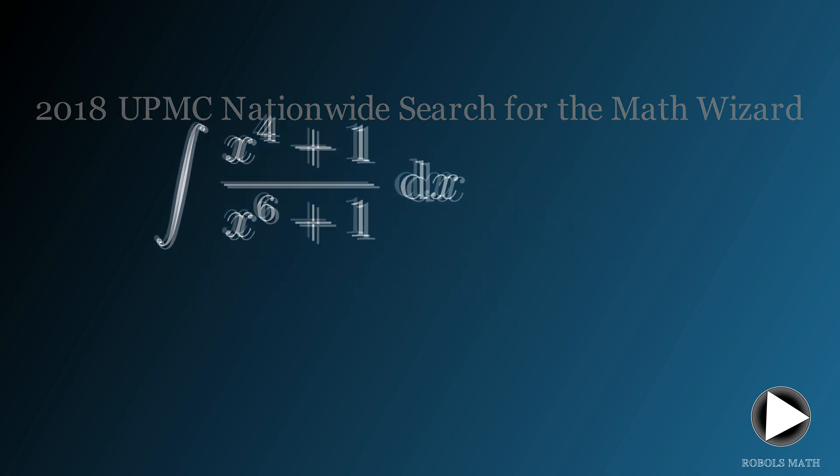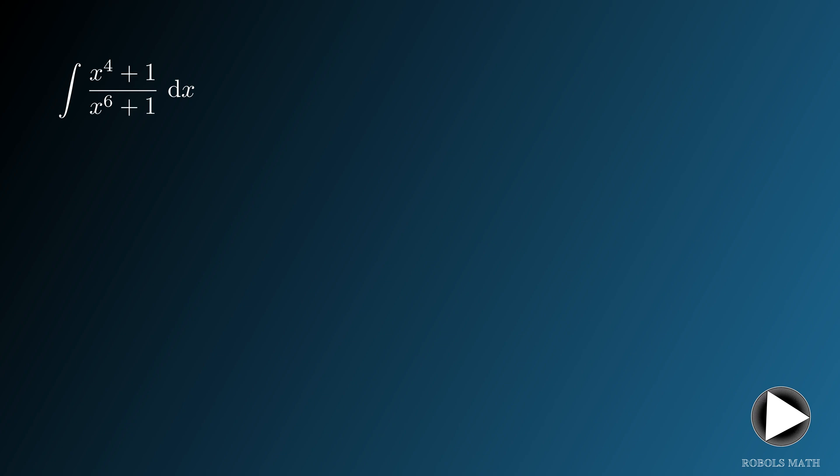This problem looks incredibly daunting, but is actually quite easy to evaluate. The trick here is to rewrite the numerator by introducing x squared. By doing that, we can split the integrand into two.